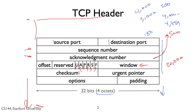If the urgent bit is set, the urgent pointer points to where in the segment that urgent data is. Finally, the offset field is needed because TCP can have options and you don't necessarily know where they end, so the offset tells you at what offset within the segment data begins. If you have options, the offset tells you their size and your TCP stack knows to look inside there for options. The options are padded to be four octets wide.